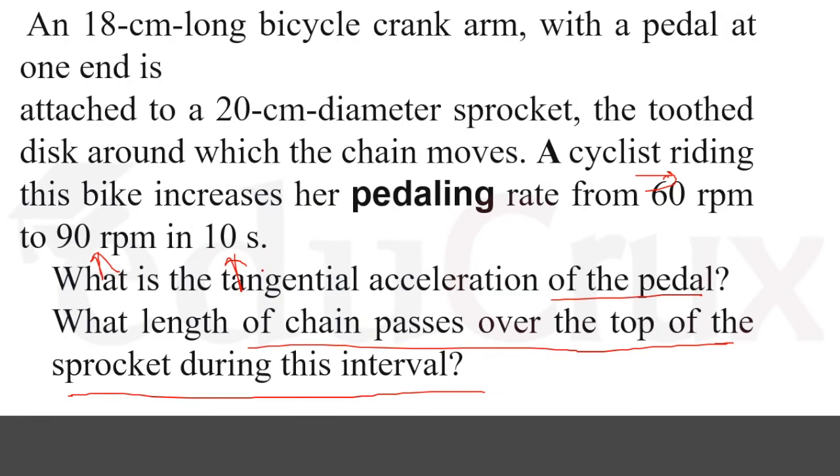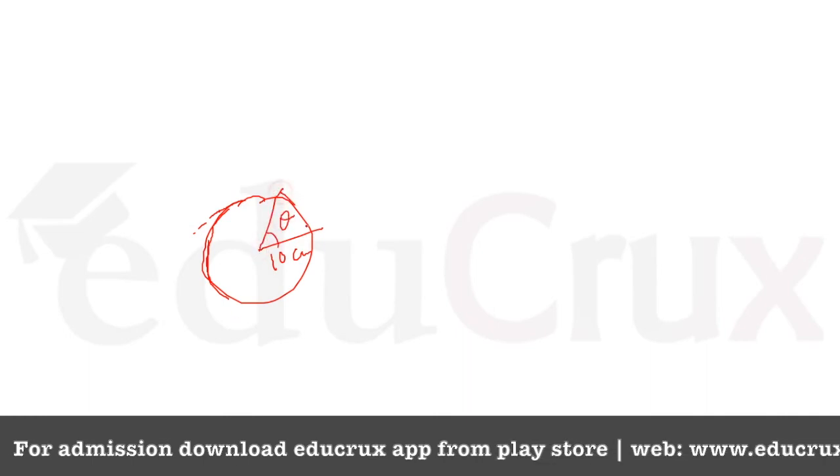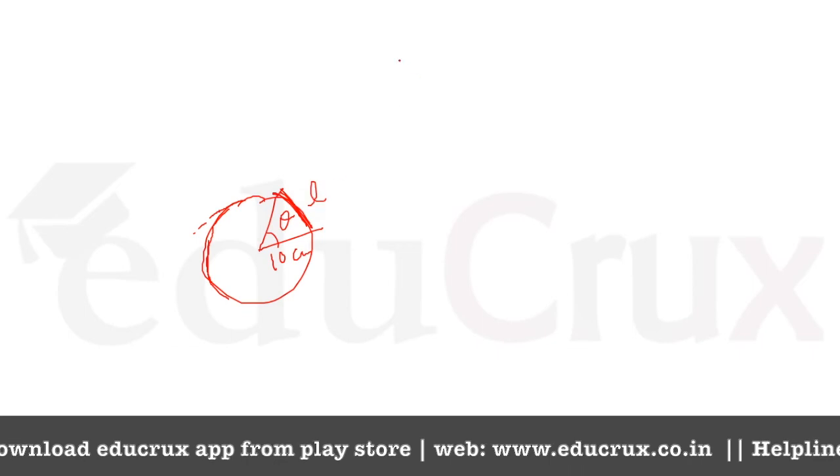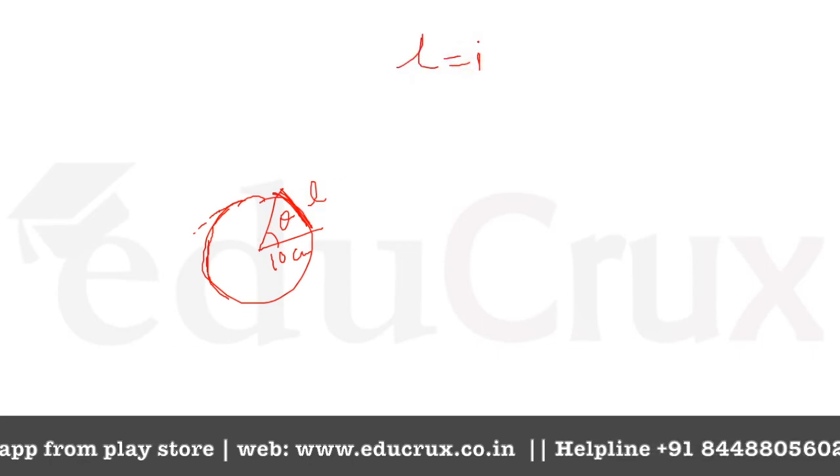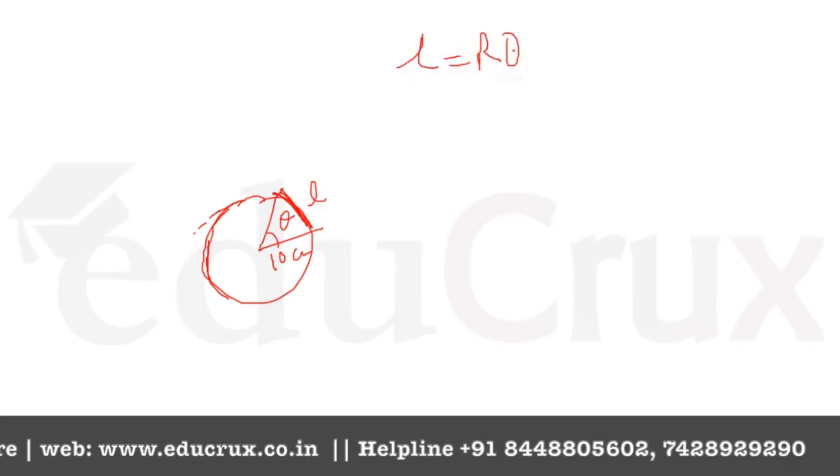So what is the length? So we know that our sprocket actually has radius, we calculated as 10 centimeter. So if we calculate the theta, if we calculate the theta, then we can calculate the length, which is equal to R theta. We know length is equal to R theta.